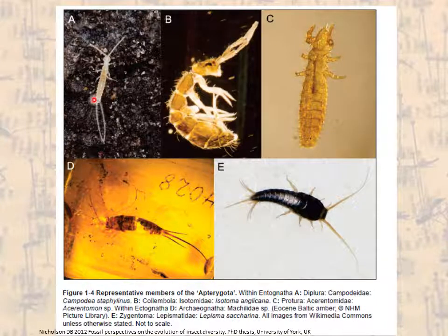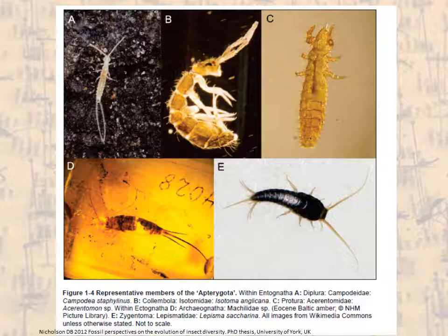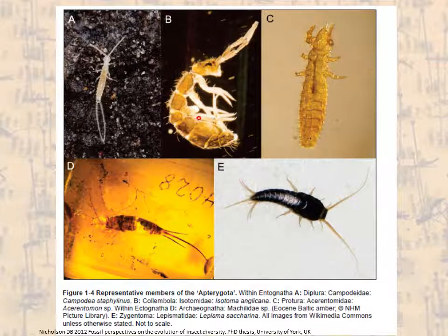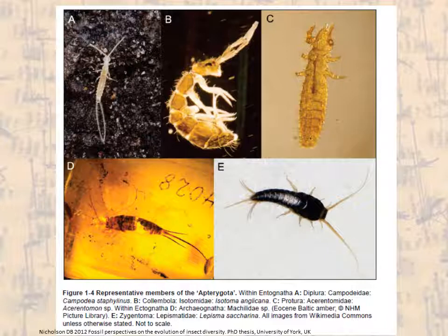Their relatives include the diplura and a much less well-known group, the protura. All of these are not true insects because their mouthparts are internal rather than external, as they are in true insects. Collembola, the springtails, appear about 410 million years ago in the fossil record, actually from Rhynie in Scotland.